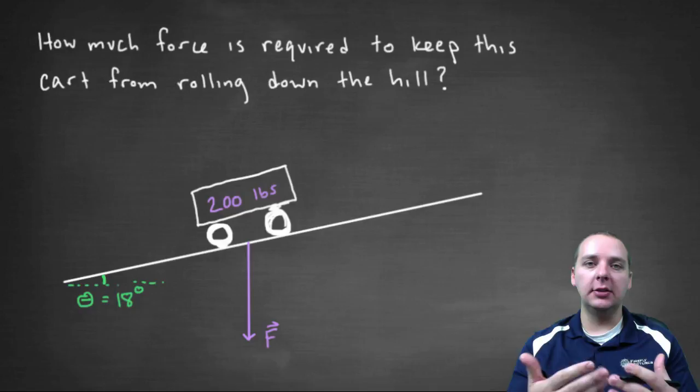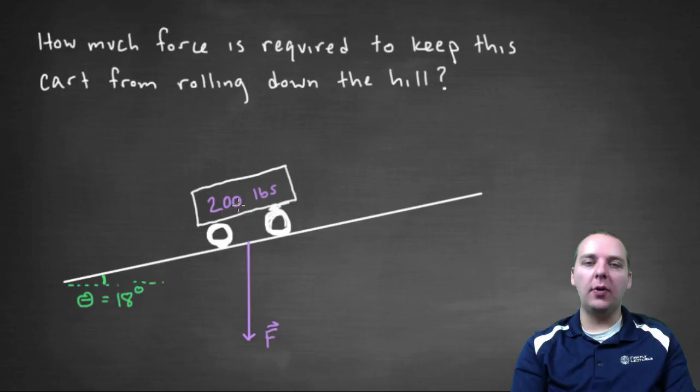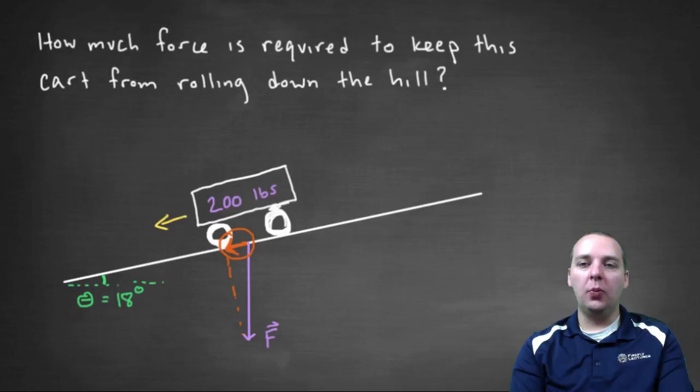This is a very popular example dealing with projections that we've been studying lately. Here's what's going on: we have this cart and the gravitational force is directly downwards, but there's going to be another force coming into play that's wanting to let it roll down the hill.